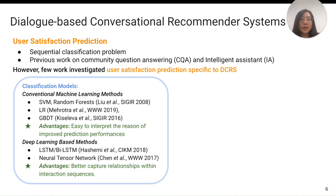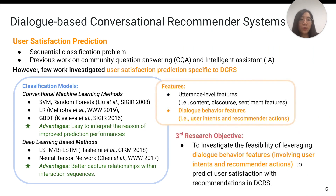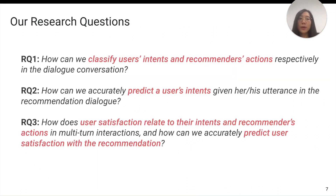Similarly, little research has studied user satisfaction prediction in this context, so we surveyed related work in other contexts. Inspired by research that incorporated user intent as features to identify user satisfaction, in our third objective we particularly consider both user intent and recommender actions as dialogue behavior features to perform this prediction. In our work, we have three research questions: How can we classify user intent and recommender actions? How can we accurately predict user intent given the utterance? And how does user satisfaction relate to their intent and recommender actions, and how can we predict user satisfaction?